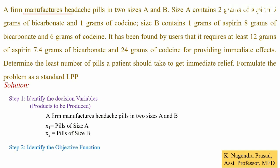The next step is to identify the objective function. Observe the data — what is to be determined. In the last sentence of the data, it is stated that we need to determine the least number of pills a patient should take to get immediate relief. So the objective function is Z equal to x1 plus x2.